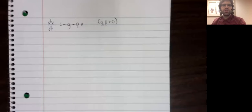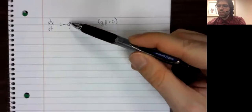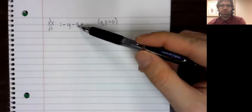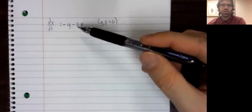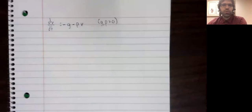Let's go ahead and explicitly find the velocity function in the case where we do not neglect air resistance. Here is the differential equation we are looking at. G and rho are both positive constants, and we're going to separate our variables.